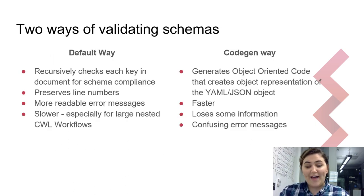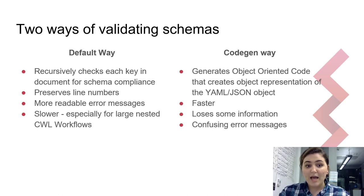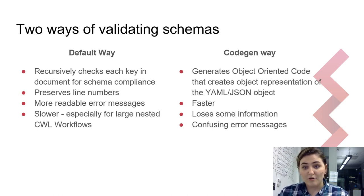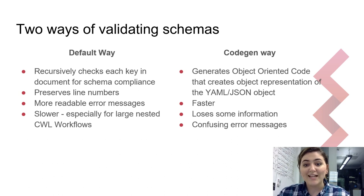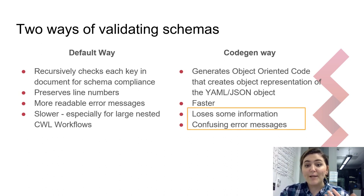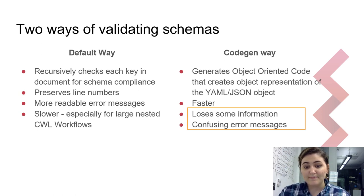Currently there are two ways of validating schemas that Schema Salad uses. The default way recursively checks each key in the document for schema compliance, preserving line numbers and producing more readable error messages — but it is unfortunately a lot slower, especially with large nested CWL workflows. The other way is the code gen way, which generates object-oriented code creating object representations of the given JSON object. This is a lot faster, but it loses some information and has confusing error messages. Addressing those issues is what this presentation is about.